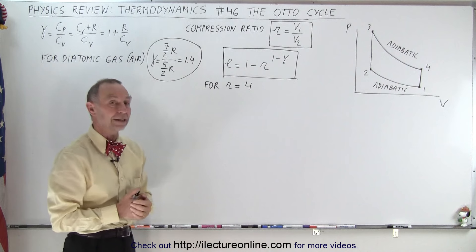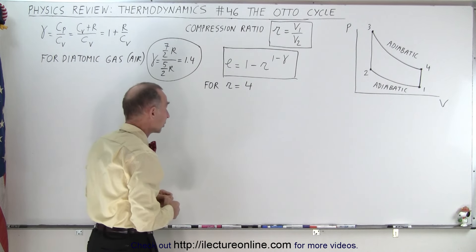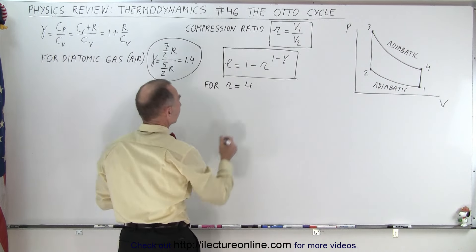Now let's say that the compression ratio is 4. What would be the efficiency of an engine like that? Well, let's try it out. Let's bring some numbers. All we need to do is plug it into the equation.